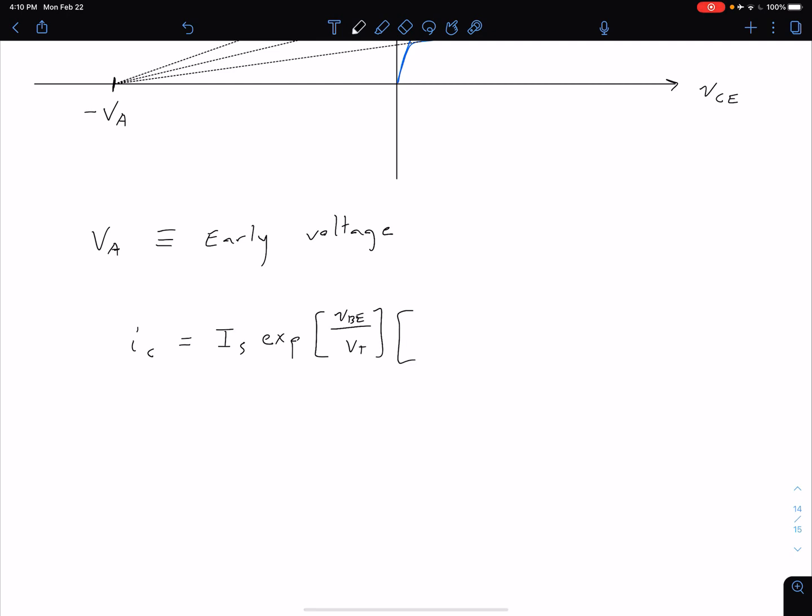So again we're not going to go through the analysis but it turns out with this early effect we can add this term. So we multiply that by 1 plus VCE over VA where VA is this early voltage that we've just introduced here.